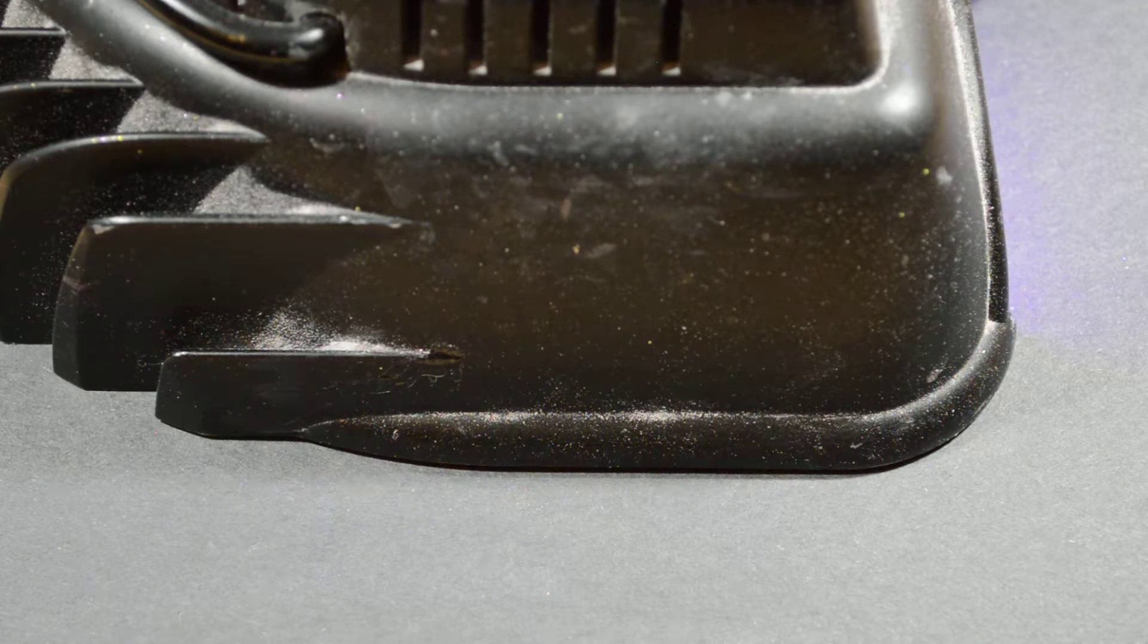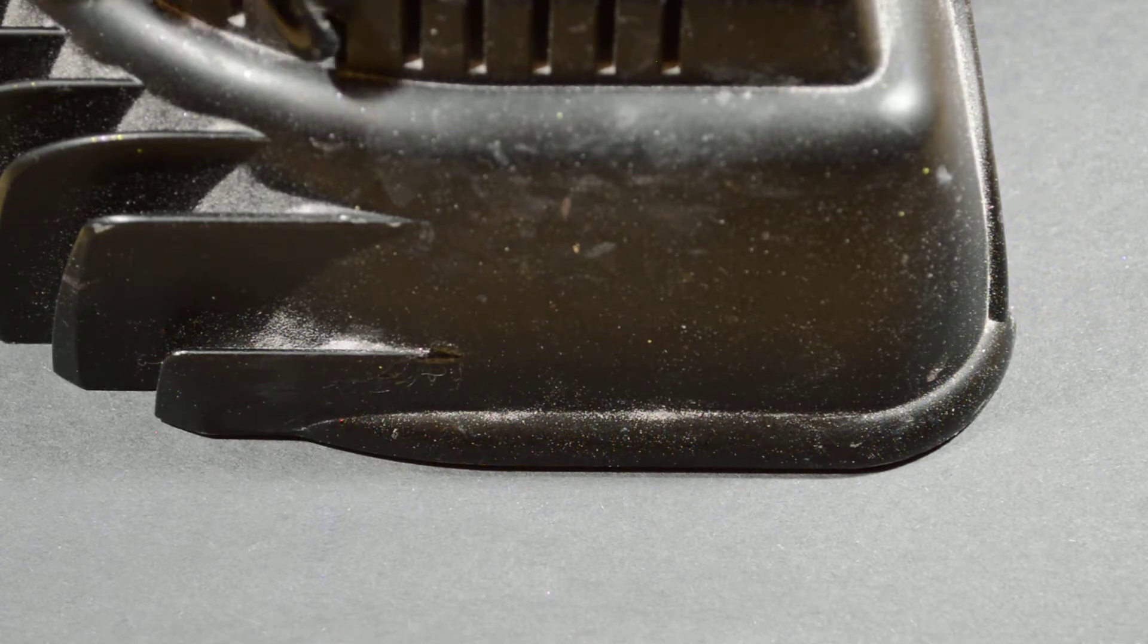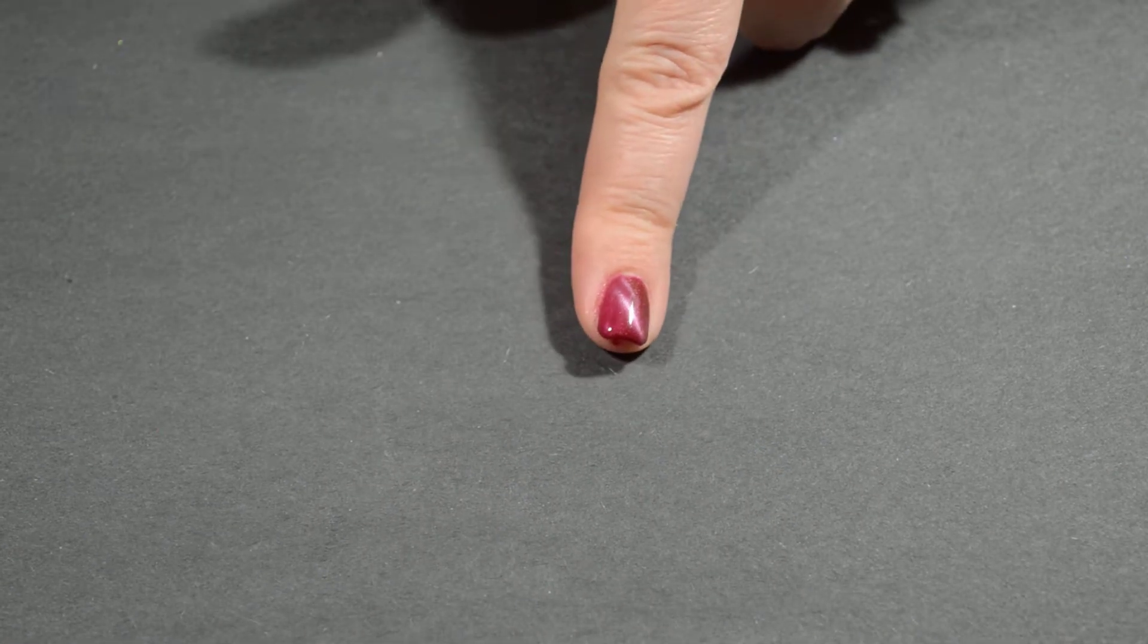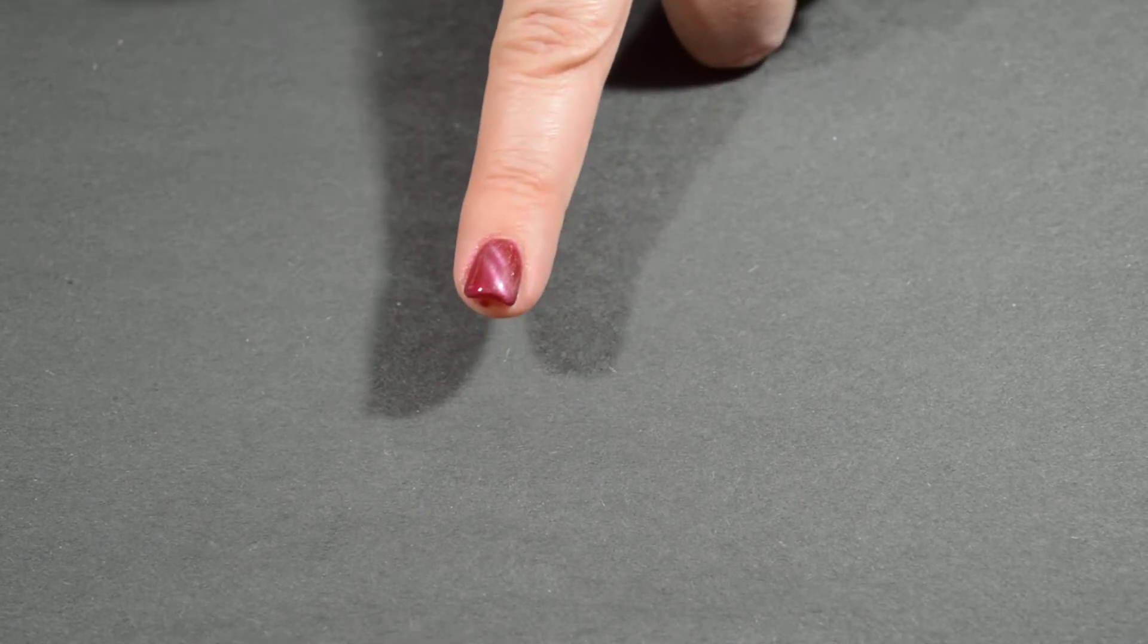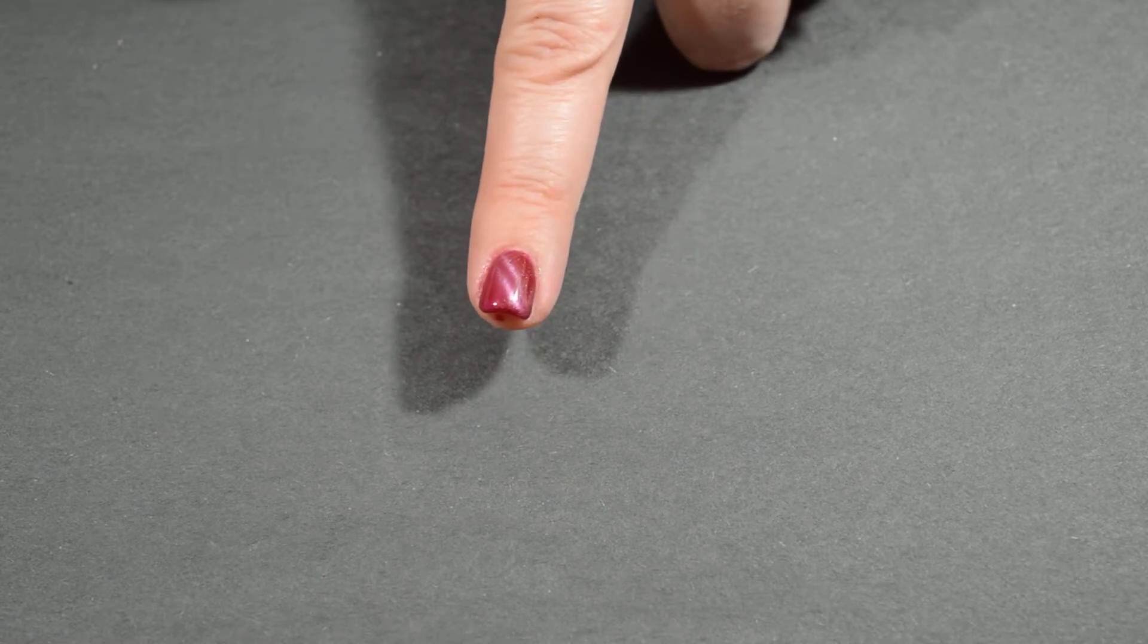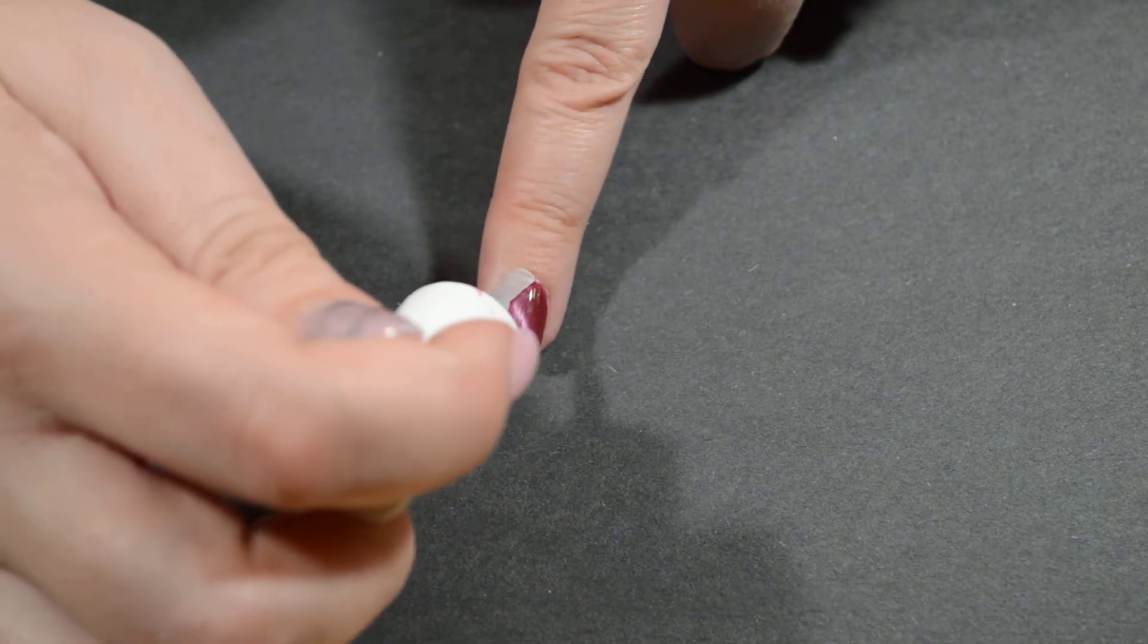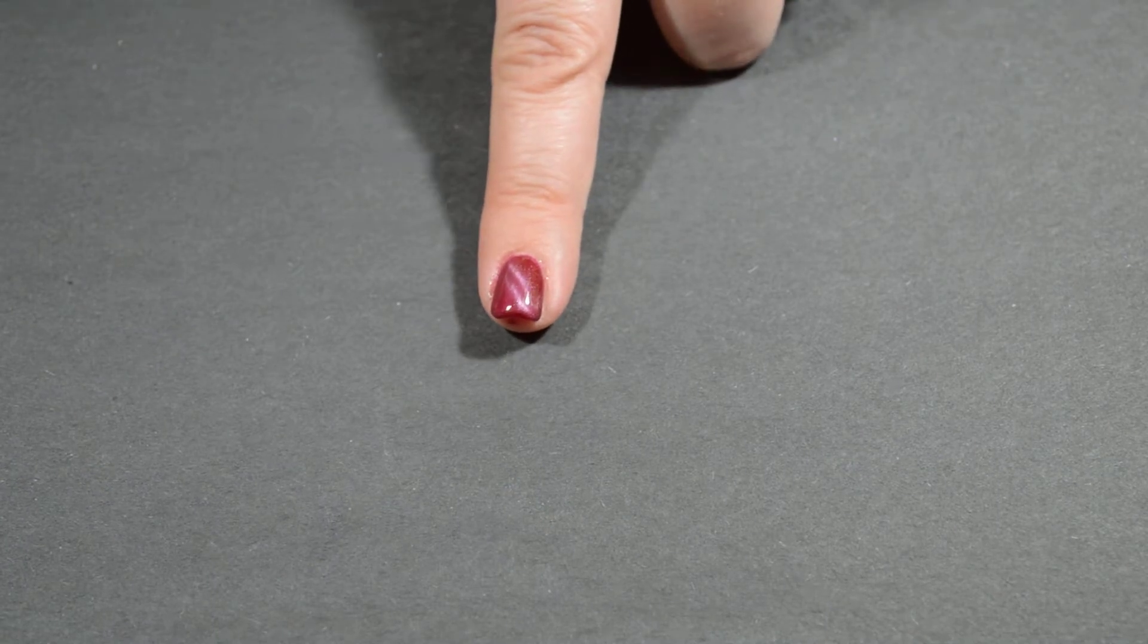By the time you get one whole hand flash cured with the cat eye design, then I will put it back in the light for a second full cure to make sure they're all the way done. After you cure it, you do your layer of top coat and put it back into the light. Then you're all set.